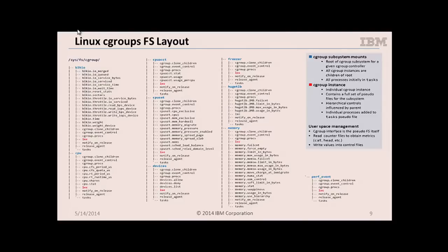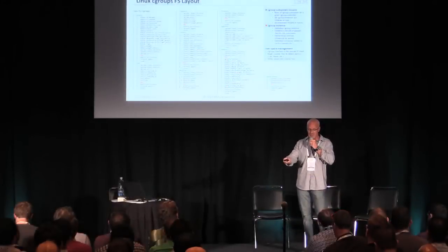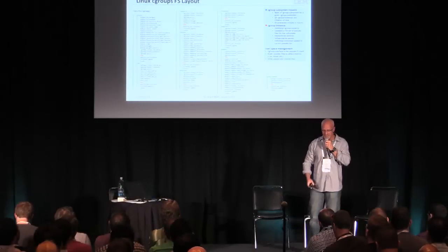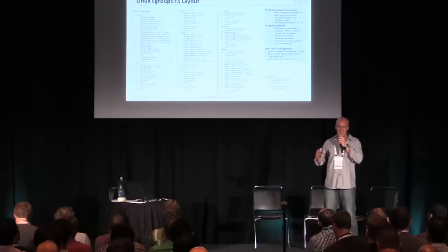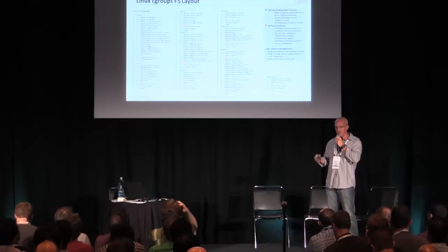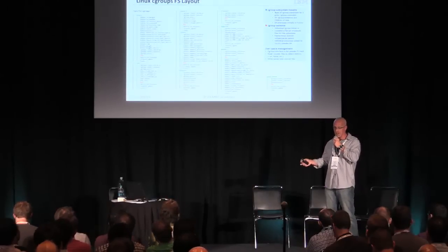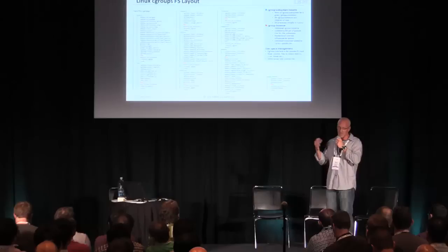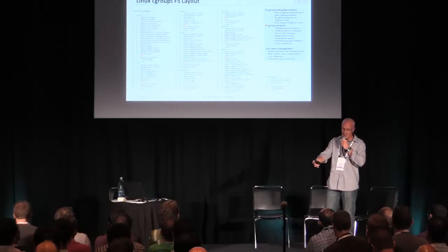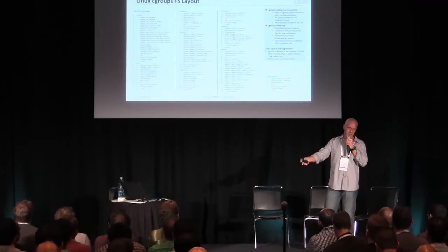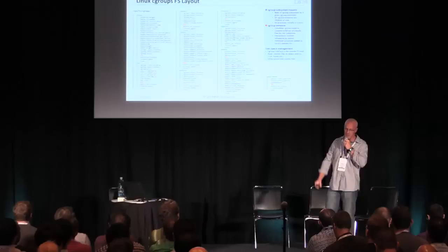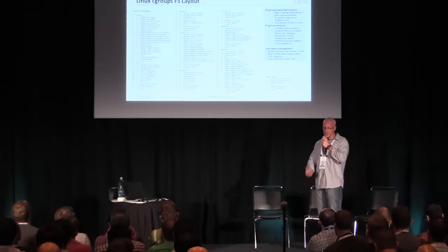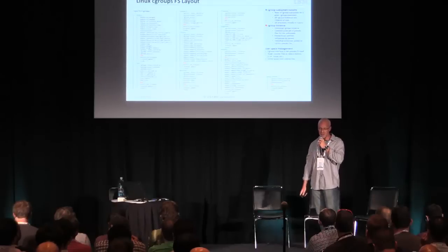If you want to assign processes to that cgroup, you just take the process ID you want to be in that group and cat it into the task file. This task file says which processes are in the cgroup. Once those processes are in the cgroup, you can get metrics about them by querying the pseudo file system, and you can set limits and constraints by echoing data into them. This is the interface into cgroups.